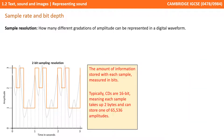Sample resolution represents how many different gradations of amplitude can be represented in a digital waveform — in other words, the amount of information we store with each sample. We measure this in bits, so you could have a sample resolution of say 8 bits. A typical CD uses a 16-bit sample resolution, and that means that every time it takes a sample of the analogue waveform, it's storing two bytes.